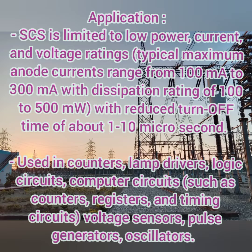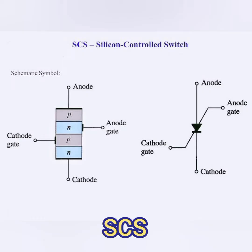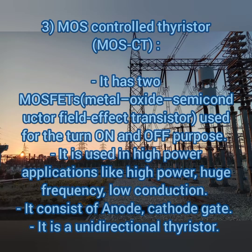The SCS is limited to low power, current, and voltage ratings — typically 100 milliamps to 300 milliamps with a dissipation rating of 100 to 500 millivolts and turn-off timing of 1 to 10 microseconds. This is the diagram of the SCS — it has an anode gate and cathode gate which are split into two, while the rest is like an SCR.